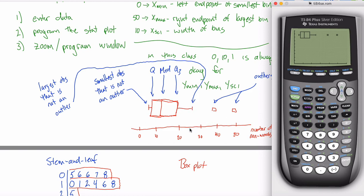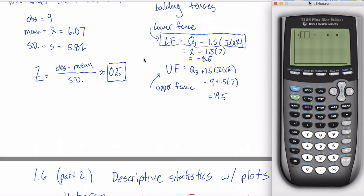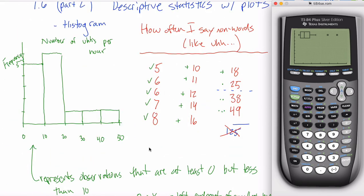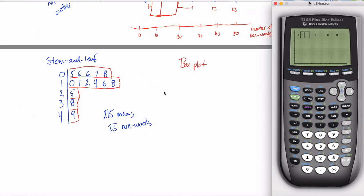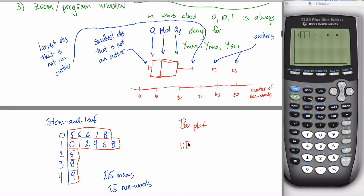So you may recall from 1.6 part 1 that we could calculate the upper fence as Q3 plus one and a half times my interquartile range. And back in 1.6 part 1, we got Q3 and the interquartile range out of one variable statistics. But now that you got a box plot, you can get those values directly off your box plot.